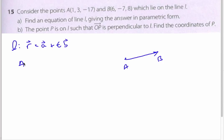And so I'm going to find first AB. I take my B value and I subtract my A. So 6 minus 1 is 5, negative 7 minus 3 is minus 10, and 8 minus 17 is 25. So here is my direction vector AB.